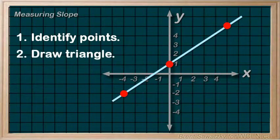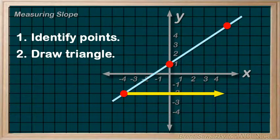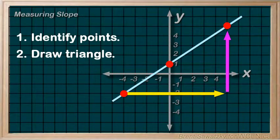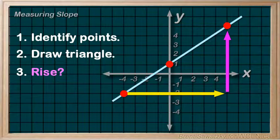Second, once we have our points marked, we can draw in our triangle. An arrow to the right, to show our run. And an arrow going either up or down, showing the rise, from the first point to the second point. At this point, we can determine the rise, either by counting the blocks, or by subtracting the y's. The y of the second point, minus the y of the first point.